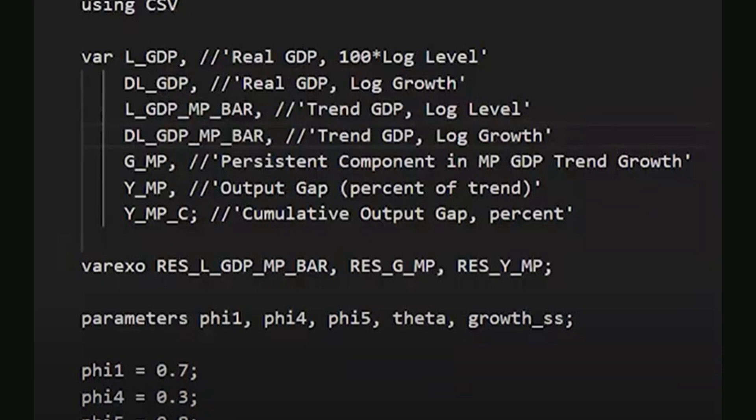Parameters are then introduced. They are listed, separated by commas, and the block ends with a semicolon. Values are assigned to each parameter, including the steady-state growth rate of real GDP for the US.